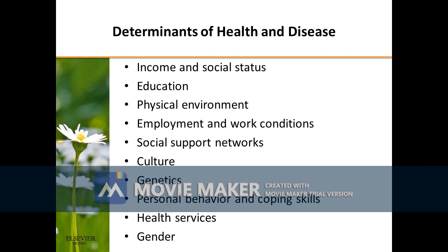Several factors related to health outcomes include: how a person develops during the first few years of life (early childhood development); how much education a person obtains and the quality of that education; being able to get and keep a job; what kind of work a person does; having food or being able to get food; having access to health services and the quality of those services; living conditions such as housing status, public safety, clean water, and pollution; how much money a person earns; and social norms and attitudes like discrimination, racism, and distrust of government. Residential segregation refers to the physical separation of races or ethnicities into different neighborhoods.